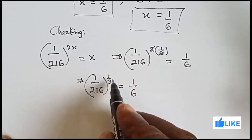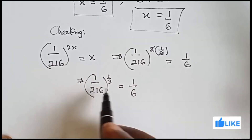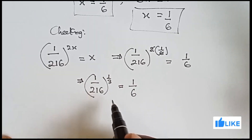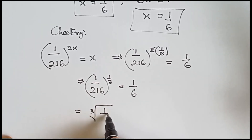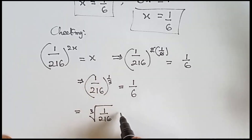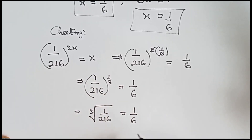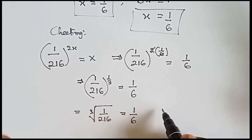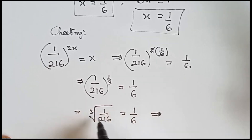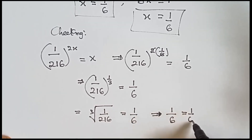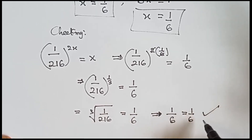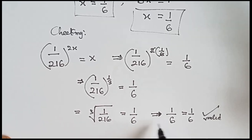This is the same as the cube root of 1 over 216. The cube root of 1 is 1, and the cube root of 216 is 6. So 1 over 6 equals to 1 over 6 — that shows our answer is valid. x equals to 1 over 6 is confirmed.